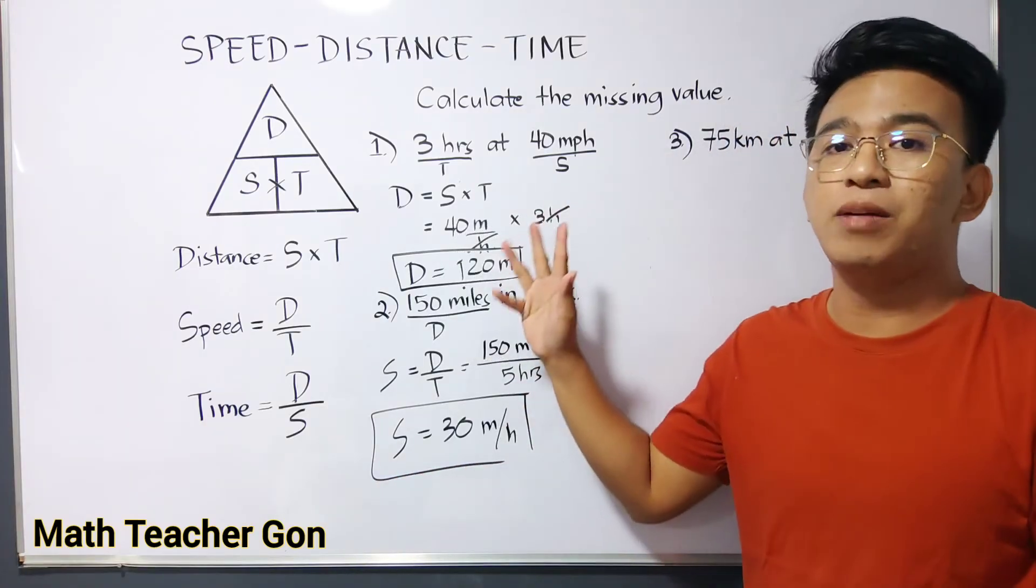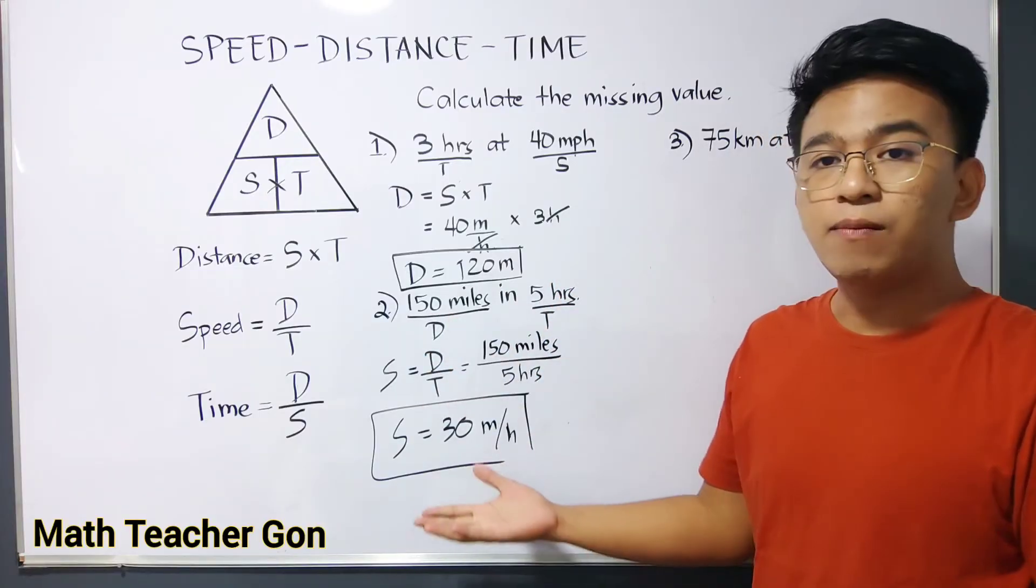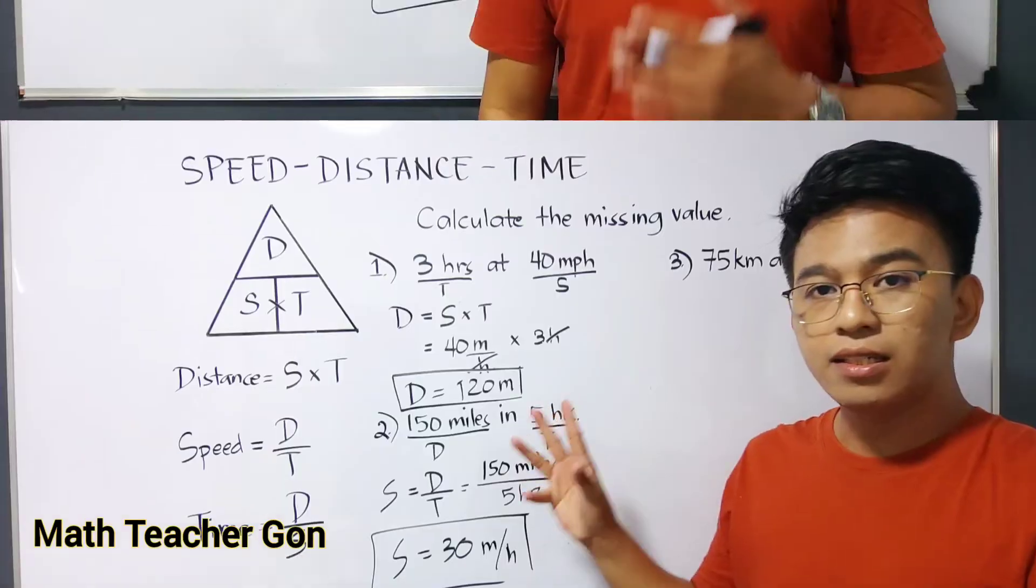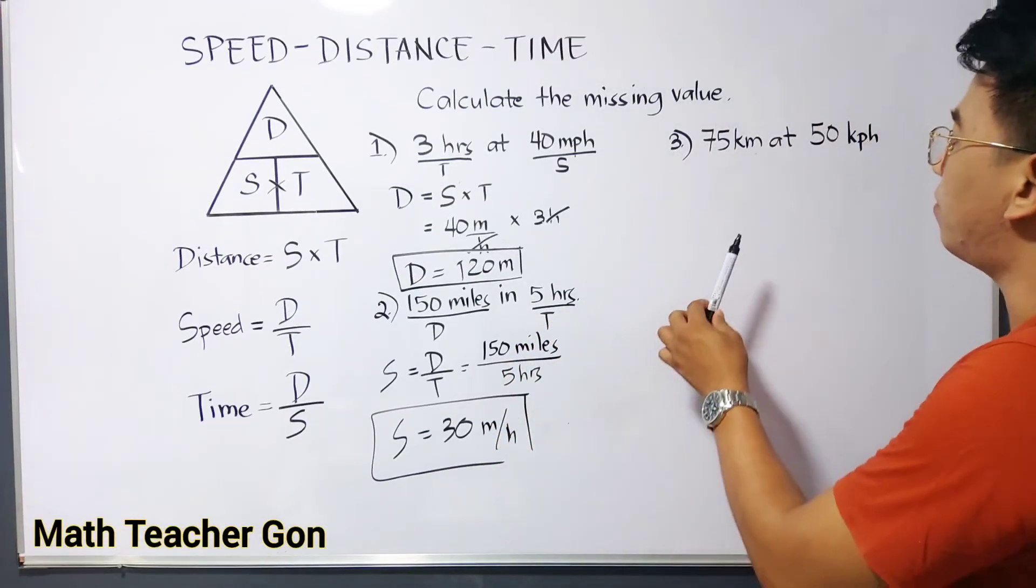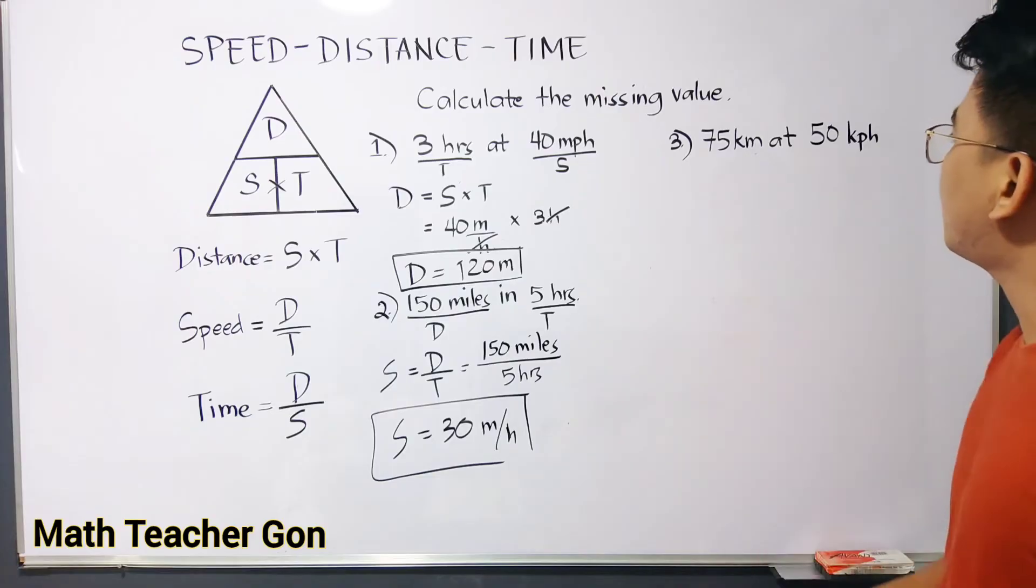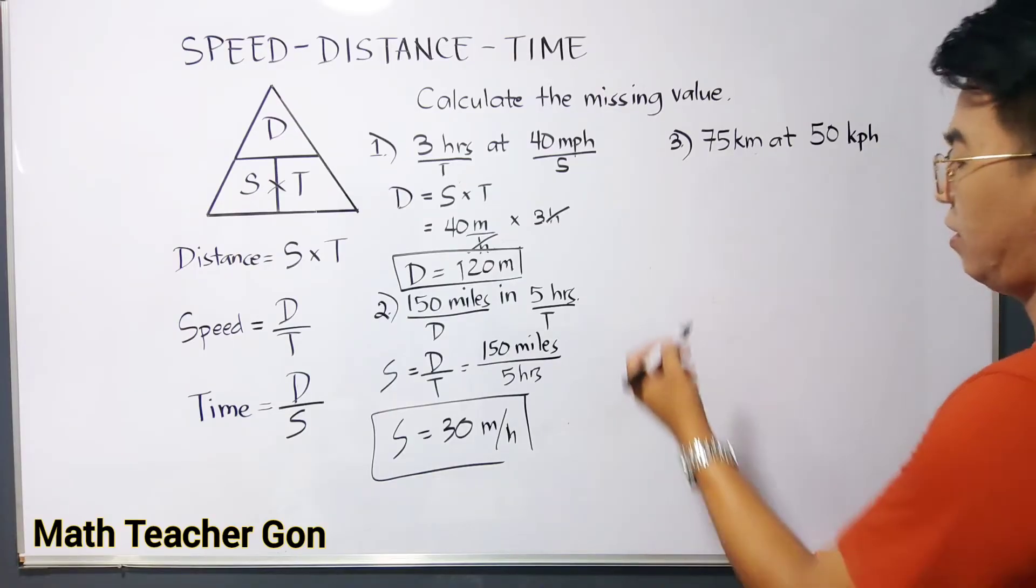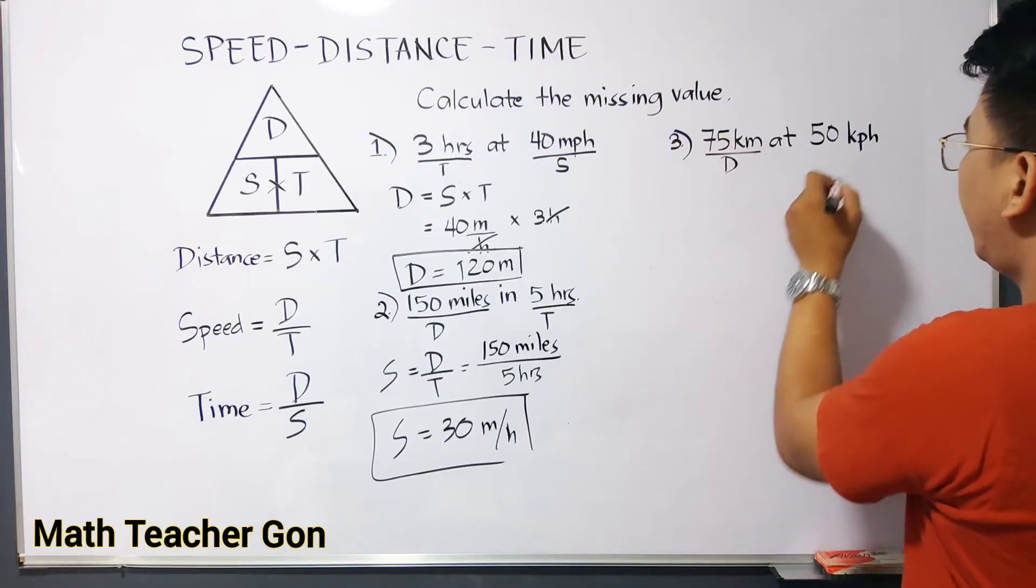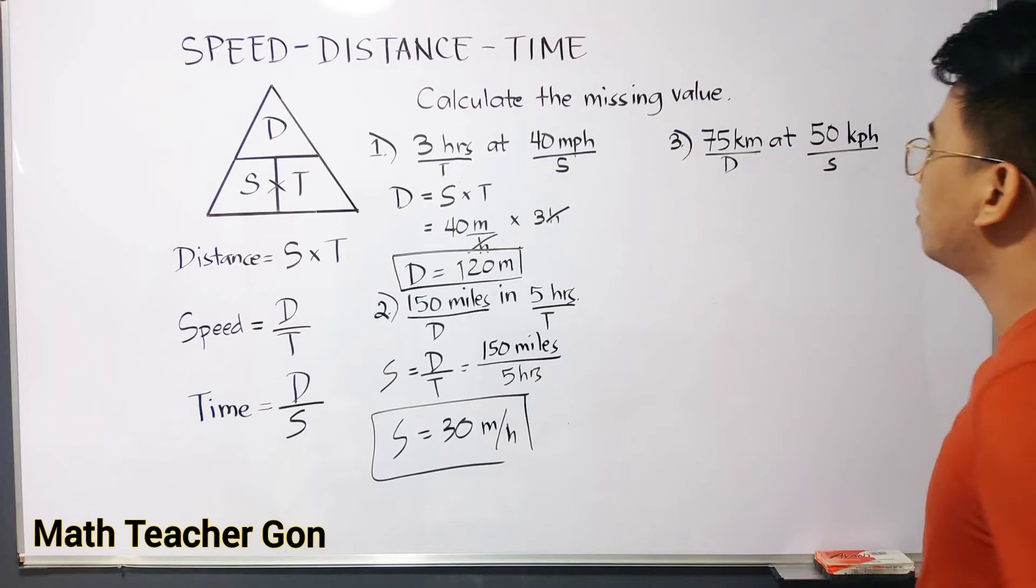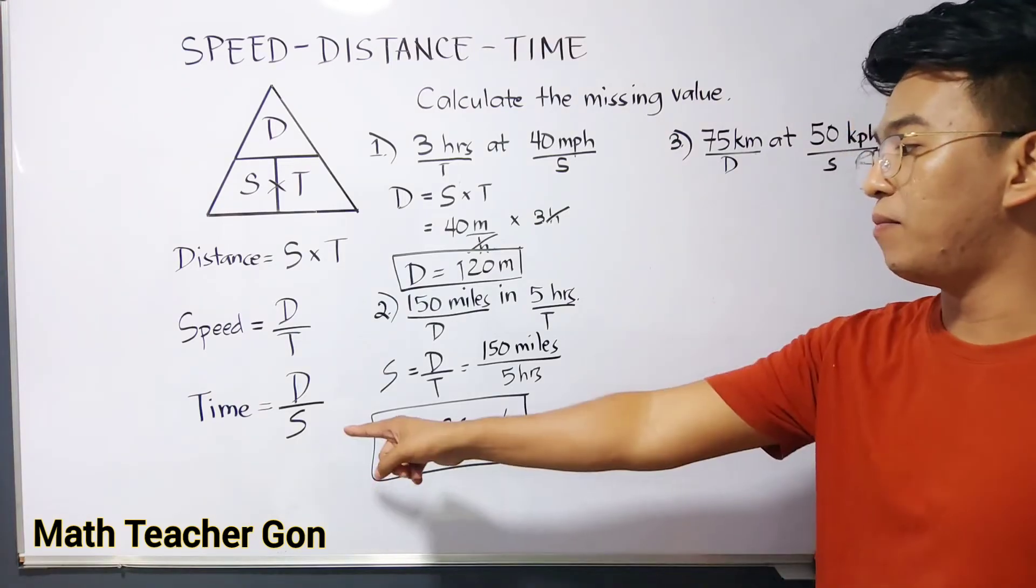Going back with our example number one, we have calculated the distance. For item number two, we have calculated the speed. So let's move on with item number three. For number three, we are given the problem 75 kilometers at 50 kilometers per hour. Now as you can see, obviously this one is your distance, and this is your speed. So the missing variable here, or the missing quantity here, is simply your time.